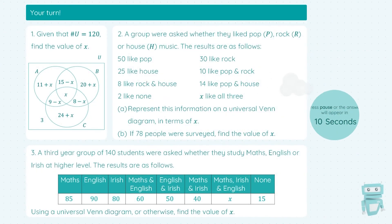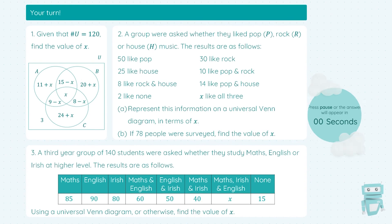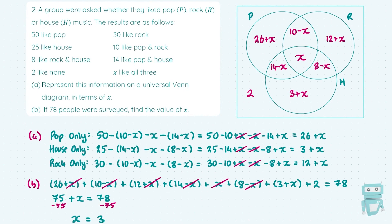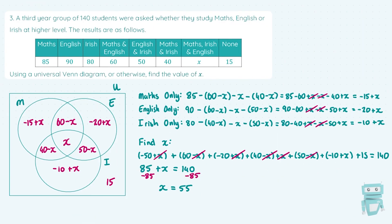Now it's your turn. Pause the video, work through these questions, and check with the solutions when they appear on screen. In question one, add up the entire Venn diagram and let it equal the grand total of 120, then solve. In question two, fill in the Venn diagram starting with the middle, being very careful with the pop only, house only, and rock only regions; then for part B add up the entire diagram, let it equal 78, and solve. Question three also requires filling in the Venn diagram carefully, then adding everything up and letting it equal the total to find X.